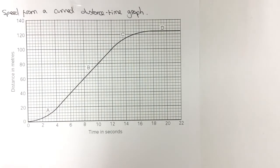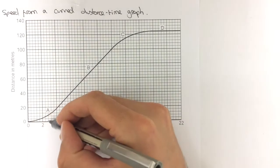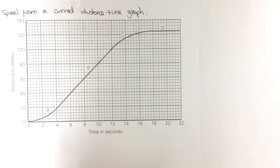But the problem is, how do you find the gradient when the graph is curved? So, imagine with this graph that I wanted to find out the speed at a time of 3 seconds, which would correspond to this point here. Now, the graph is curved at that point, so it's not straightforward to find the gradient.